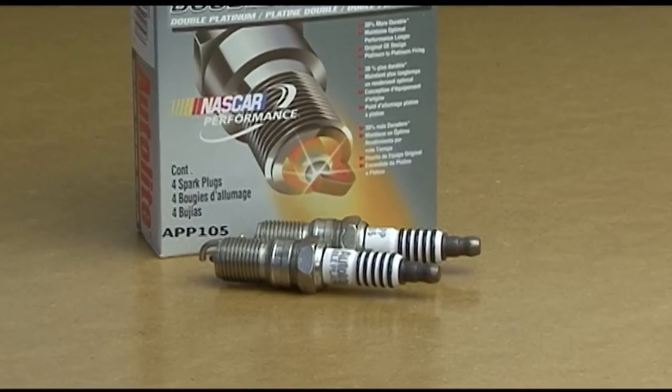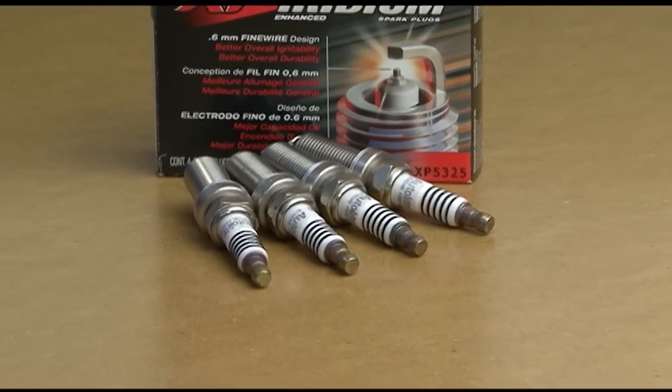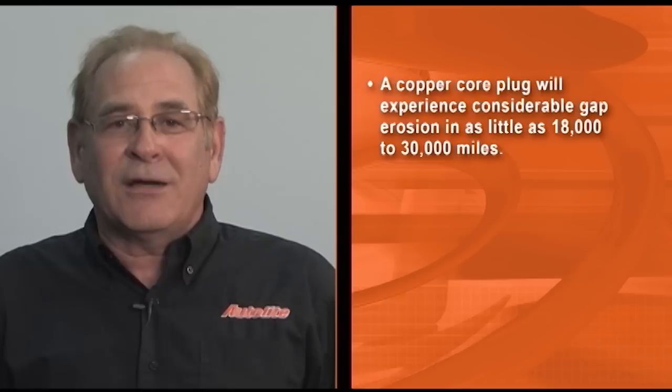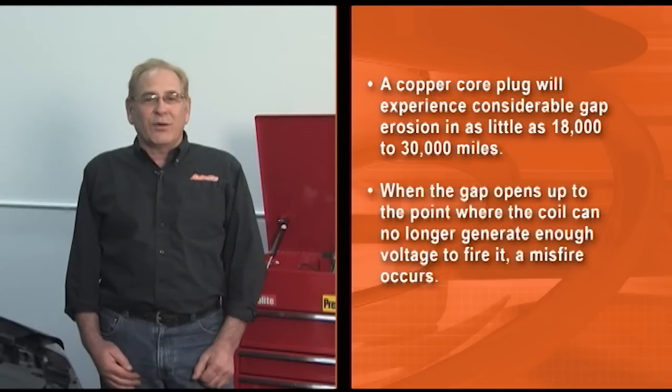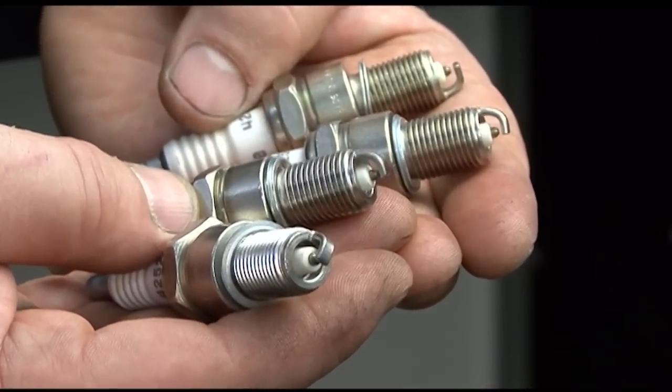An Autolite double platinum spark plug or an iridium enhanced Autolite XP spark plug should be used in DIS ignitions. While it may seem like a bargain to use a copper core spark plug in a modern ignition system, it really isn't. A copper core plug will experience considerable gap erosion in as little as 18 to 30,000 miles. When the gap opens up to the point where the coil can no longer generate enough voltage to fire it, a misfire occurs. Your customers will not be happy when their original plugs lasted 100,000 miles but the copper core spark plugs you installed only lasted 30,000. Remember, when copper core plugs were common, so was the once-a-year or 12,000 mile tune-up.